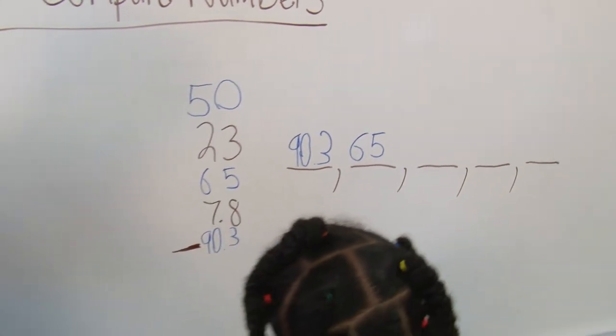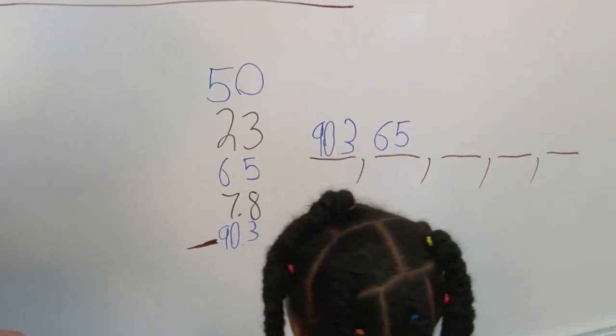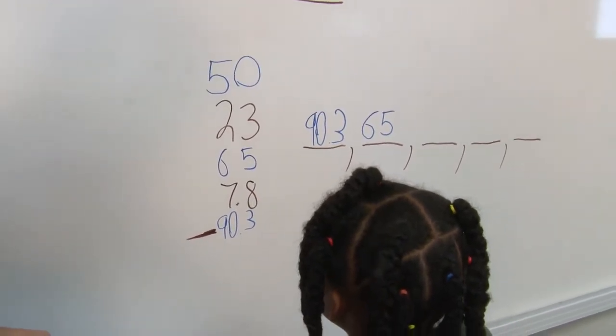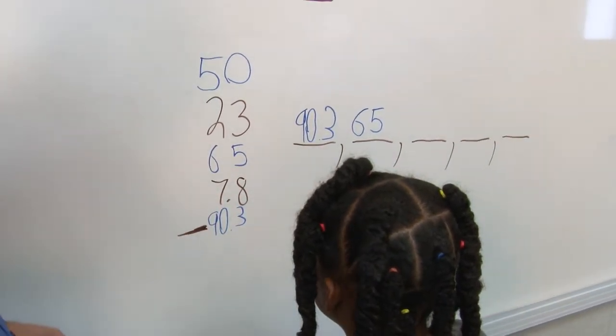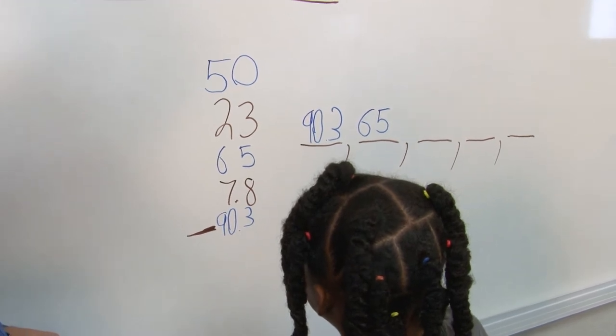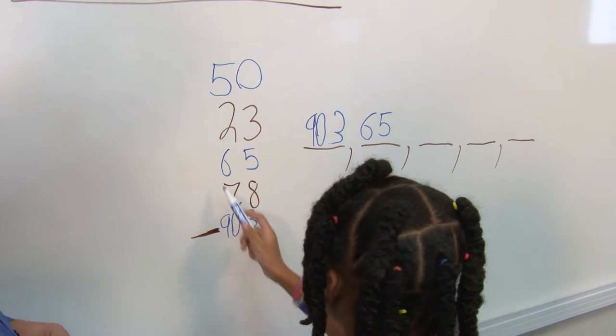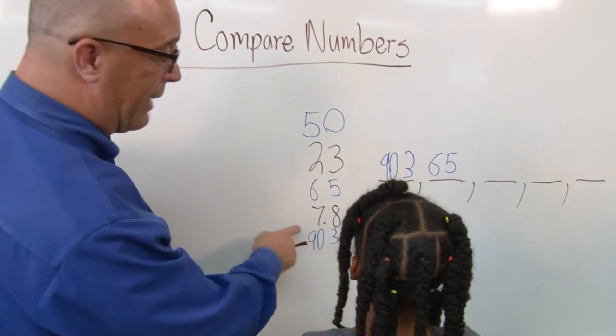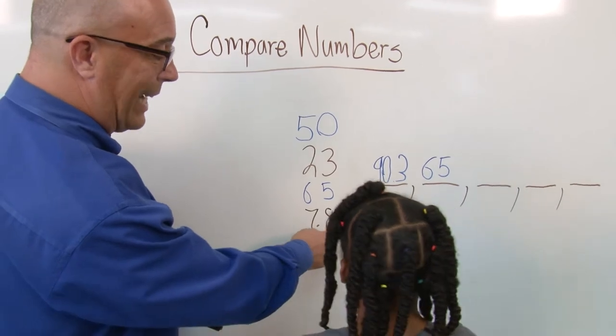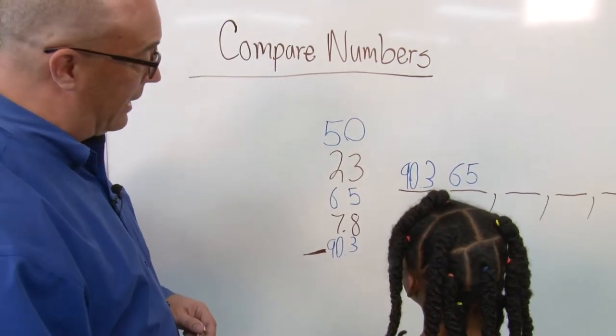Why? Because 7.8 is... But isn't 7 bigger than 6? Yes, but it's not a two-digit number. This is... Correct. Right? That's the whole number 65. This is the whole number 7 and only 8 tenths of a number, right? That's a part. Yes. So, perfect explanation on that.